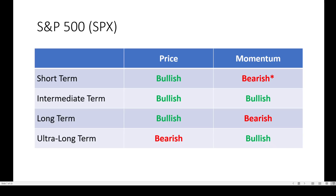Let's get into the S&P 500. Not much change in the chart here. You see price is still bullish on the short through long-term, bearish on the ultra long-term, which stayed bearish. The only flip we got is on the short-term momentum, which flipped to bearish.